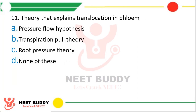Question 11: Which theory explains translocation in phloem? Option A: pressure flow hypothesis, option B: transpiration pull theory, option C: root pressure theory, option D: none of these. The correct answer is option A, pressure flow hypothesis.